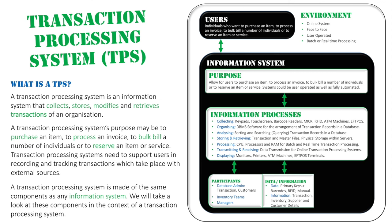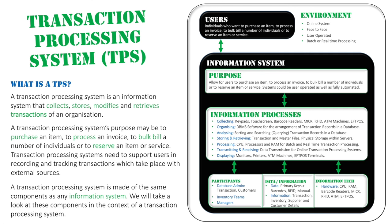Finally, for information technology: hardware such as CPU and RAM is very important for processing, while barcode readers, MICR scanners, RFID, ATM machines, and FPOS terminals are important for collecting and displaying data. For software, database management system software, network operating system software, and operating software that supports both batch and real-time processing are all essential components of a transaction processing system.